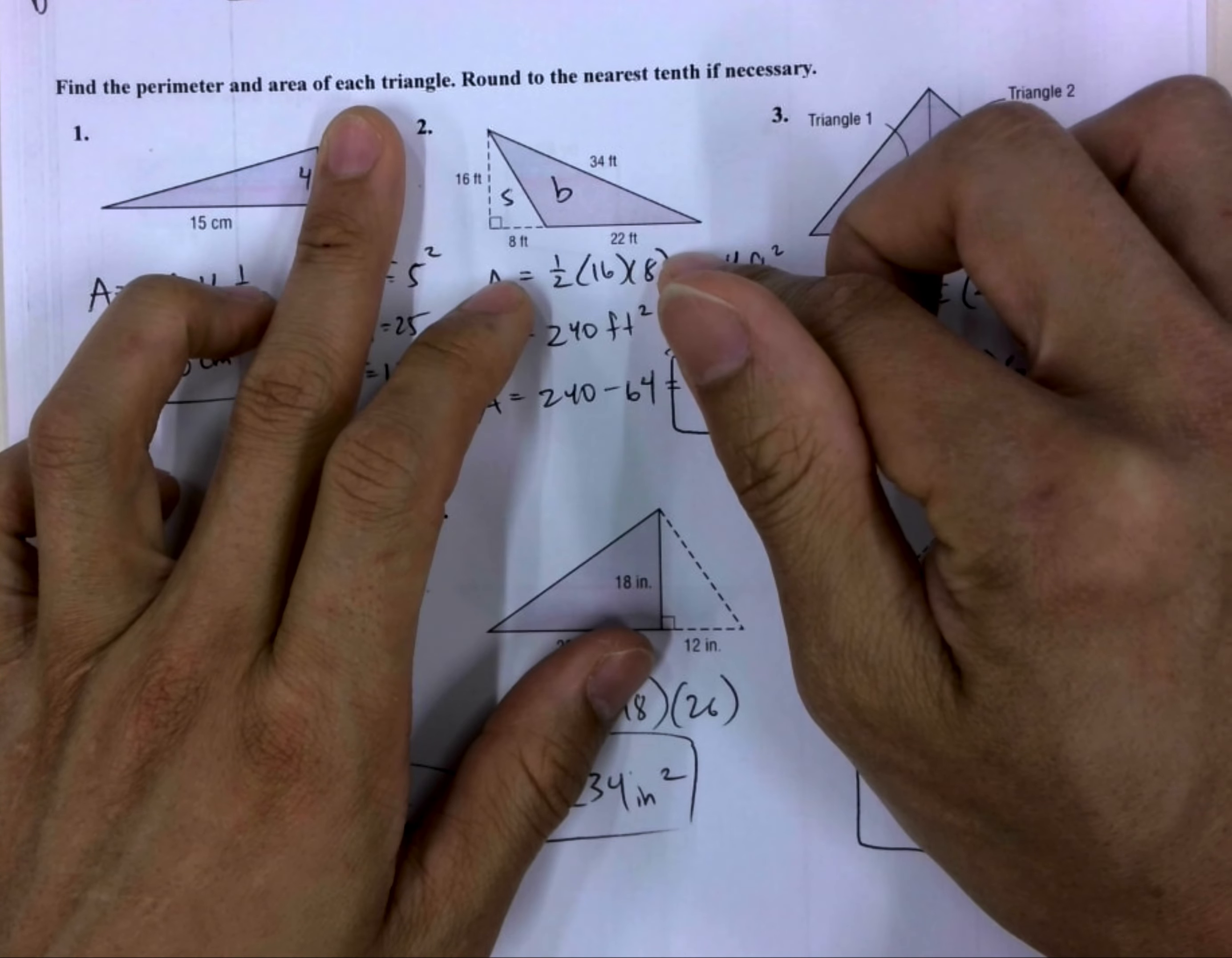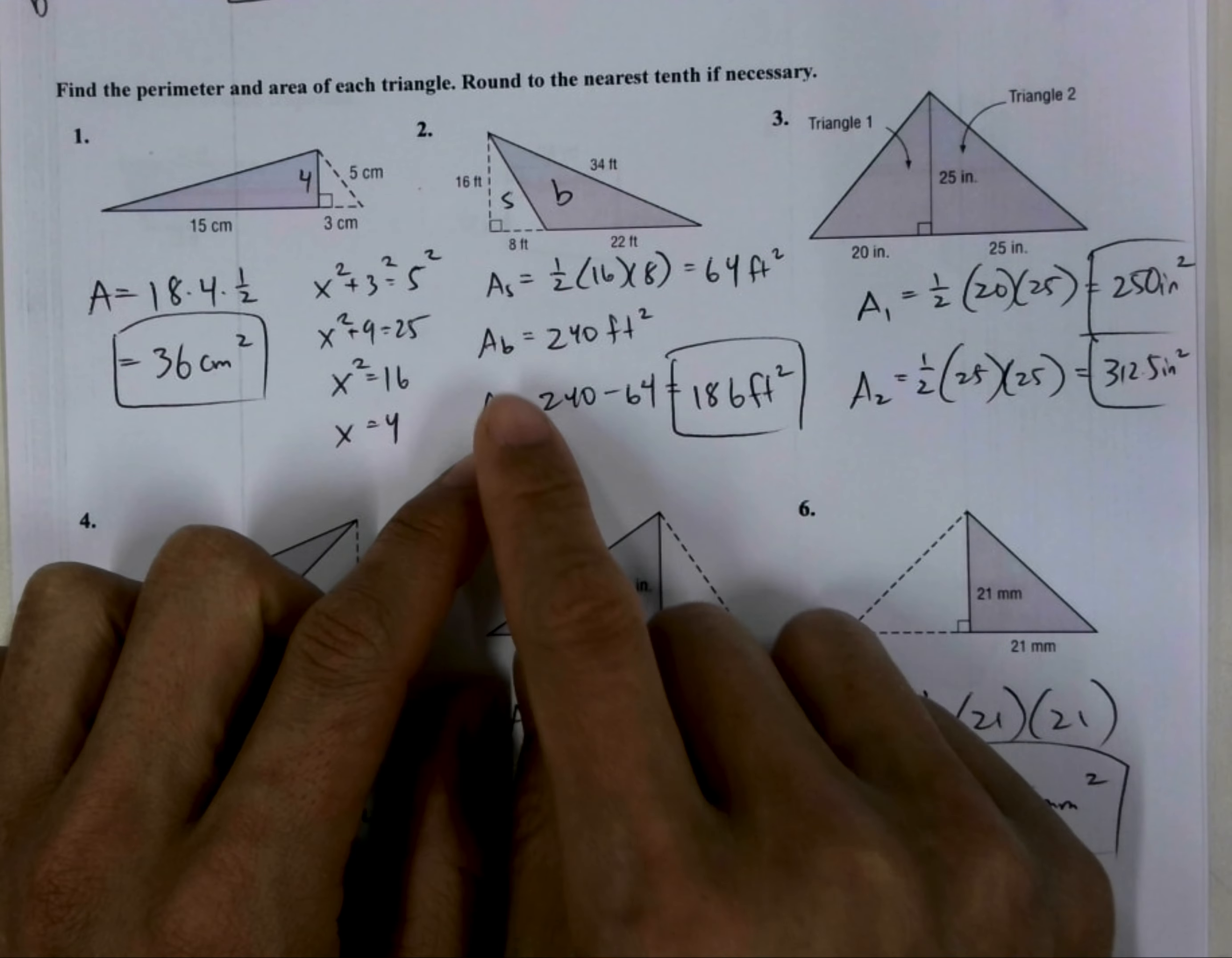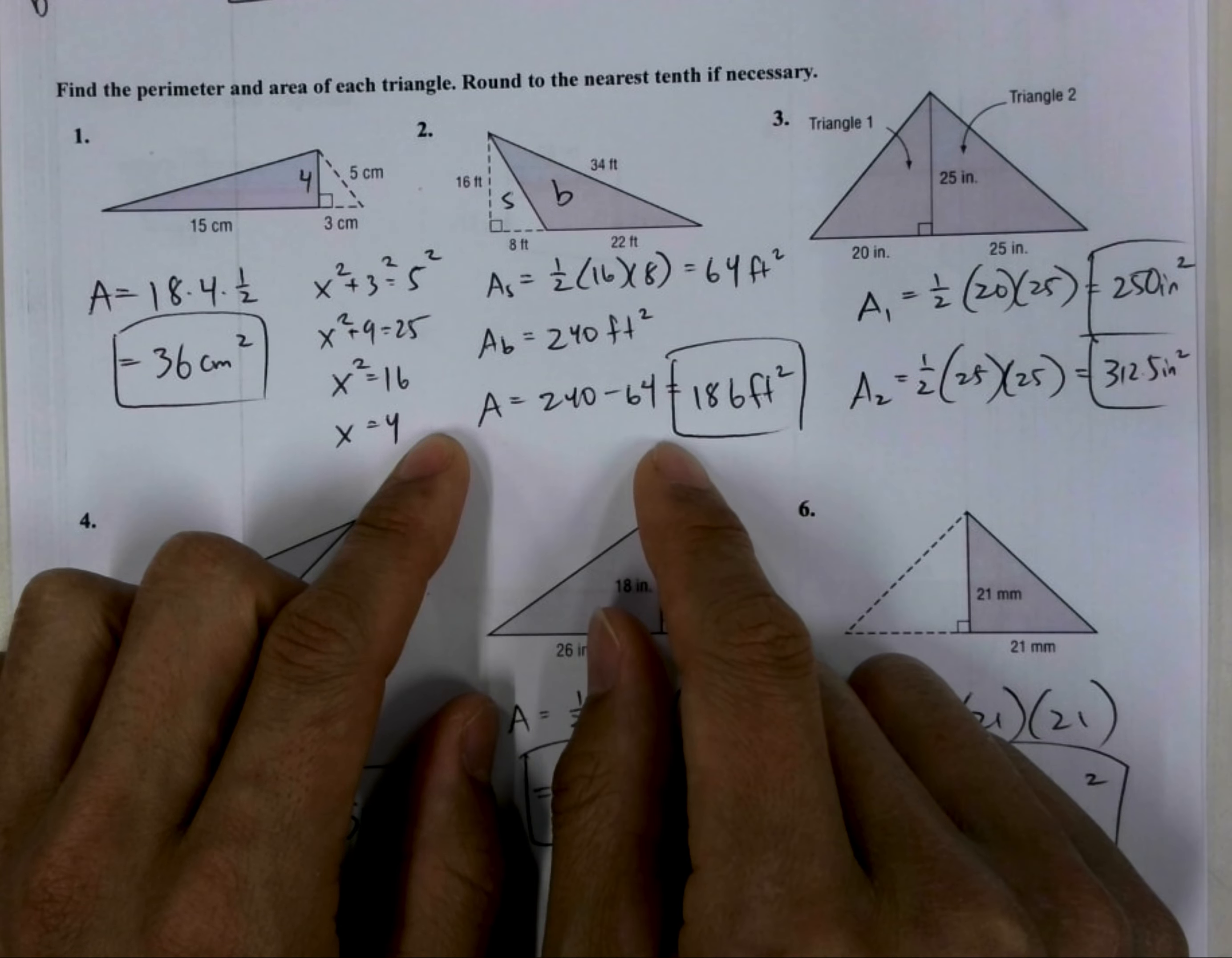Then you would do the whole triangle area, the entire triangle, minus the area of the small triangle, which leaves the area of the shaded triangle. So area of the small, area of the big, area of the shaded is big minus small.